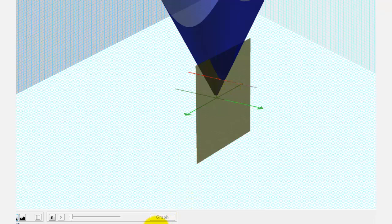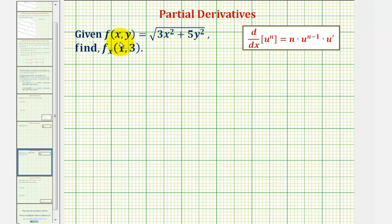So going back to our problem, let's first write f(x, y) using a rational exponent. So we can write f(x, y) equals the quantity 3x² + 5y² to the one-half power.